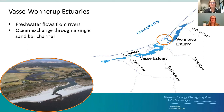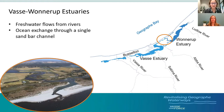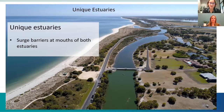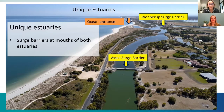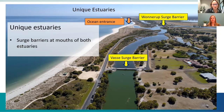Just like many other West Australian estuaries, this sandbar can close seasonally, isolating the estuaries from the ocean. We also now mechanically open the Wannerup Inlet ocean entrance if needed. These estuaries are unique in that they share this single ocean entrance, but they are made even more unique by surge barriers at both of their mouths. Here's an aerial photo clearly showing the ocean entrance and the Vasse surge barrier in the foreground. These surge barriers are in place to prevent seawater from flowing into the estuaries, and they are the only permanent surge barriers on estuaries in Western Australia.